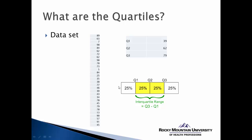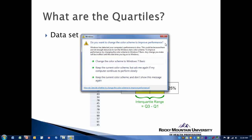We have some data on test scores — 30 data points of different test scores. Using the quartile function in Excel, I've determined the scores associated with the three quartiles. The first quartile, also known as the 25th percentile, is associated with a score of 39.